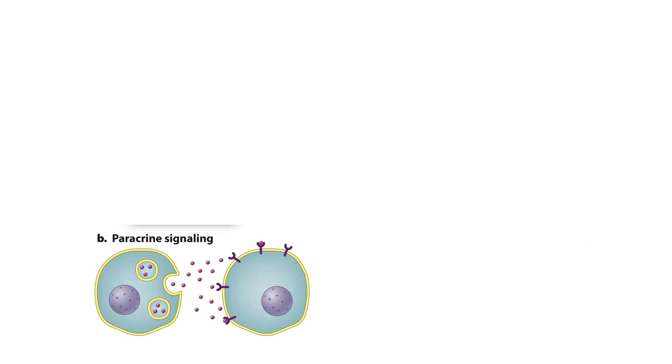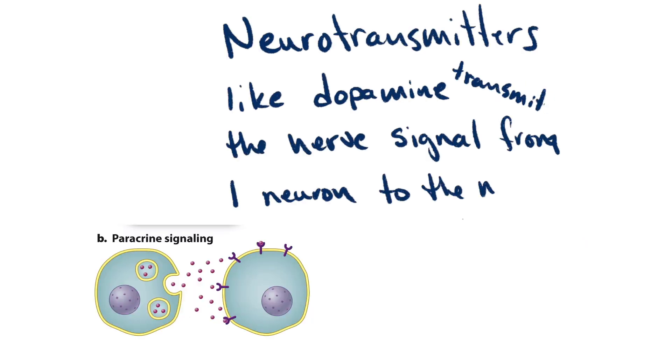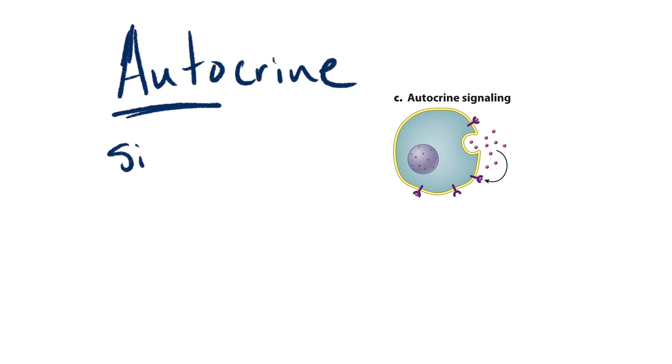Paracrine signaling is close contact signaling. We think of neurotransmitters as the ligands, like dopamine that we mentioned before, which transmits the nerve signal from one neuron to the next.